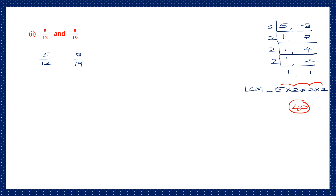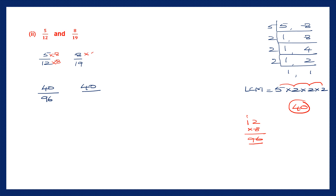So 40 is the new numerator for both fractions. For the first fraction, 5 has become 40: 5 into 8 is 40, so multiply 12 also by 8. 12 into 8: 8 twos are 16 carry 1, 8 ones are 8 plus 1 is 9 — so the denominator is 96. For the second fraction, 8 into 5 is 40, so multiply 19 also by 5. 19 into 5: 5 nines are 45 carry 4, 5 ones are 5 plus 4 is 9 — so the denominator is 95.